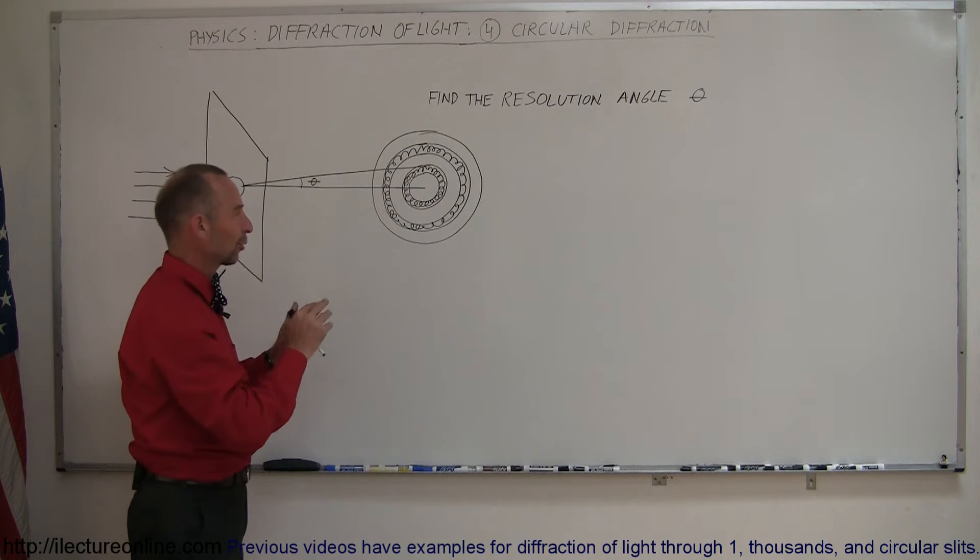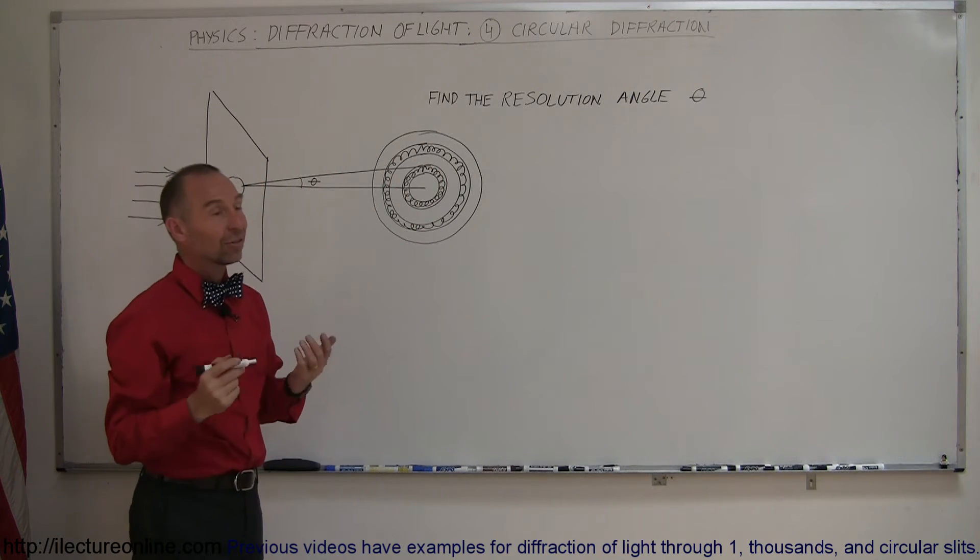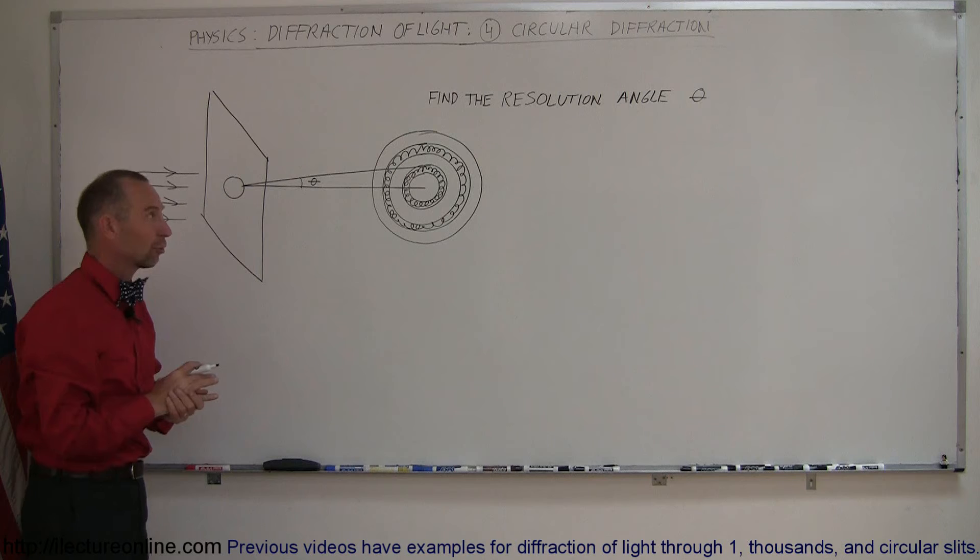The difference here is that with a circular opening, the dark fringes are circular, and so we're simply trying to find this angle right there, and that's considered what we call the angle of resolution.